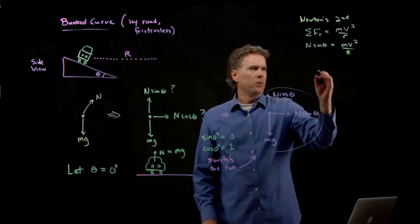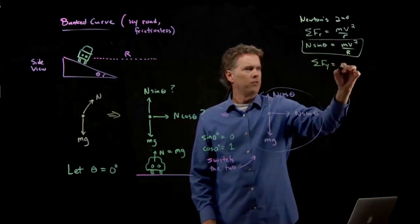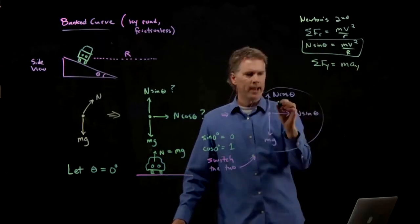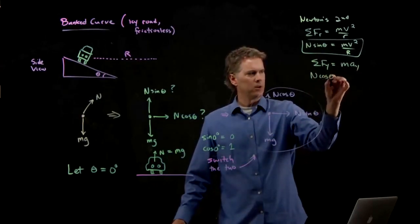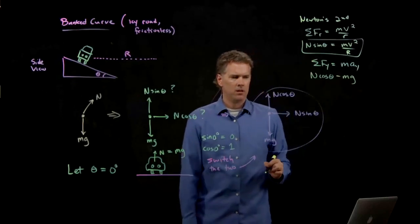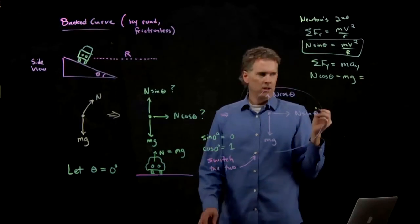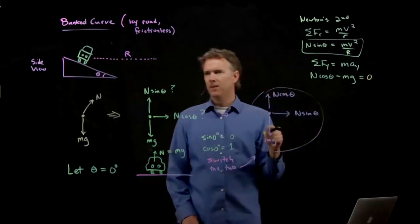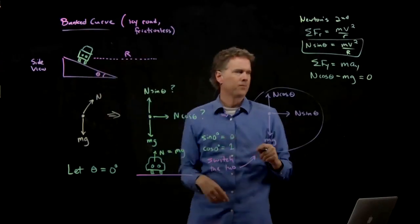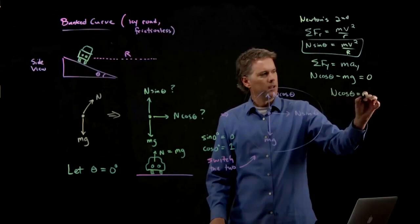We have vertical forces here that we need to worry about, and so the forces in the y direction have to add up to m times the acceleration in the y direction. We have n cosine theta going up, we have mg going down, and all of that is equal to what? Zero. There's no acceleration in the y direction. This car is going around in a horizontal circle. It's not going up or down. And so we get n cosine theta equals mg.